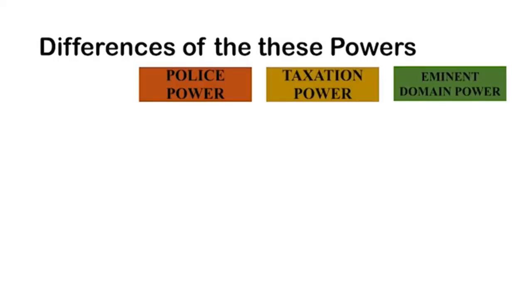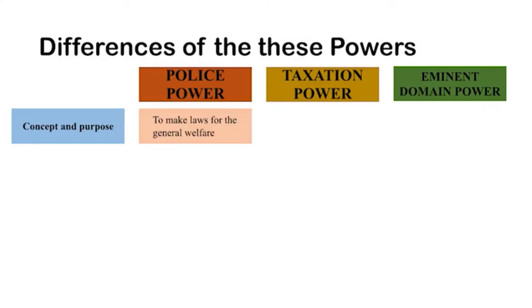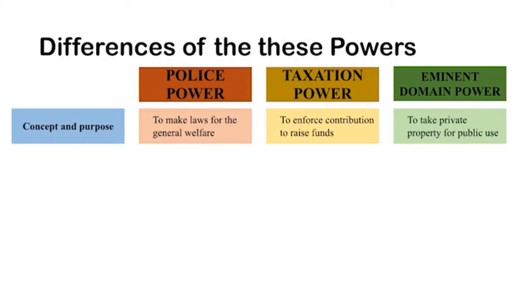There are also differences among these powers. As to concept and purpose: police power is the power to make laws for the welfare of the public; taxation power is to enforce contribution and raise funds; and eminent domain power is to take private property for public use. Police power is not just about police or armed personnel — it also includes regulation of properties by licensing, and the construction of educational institutions, hospitals, and infrastructure.